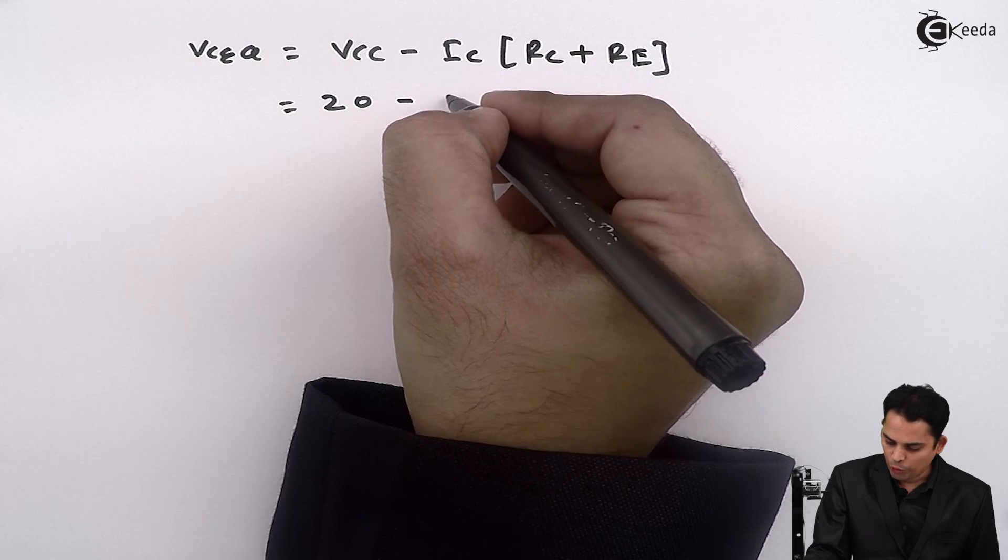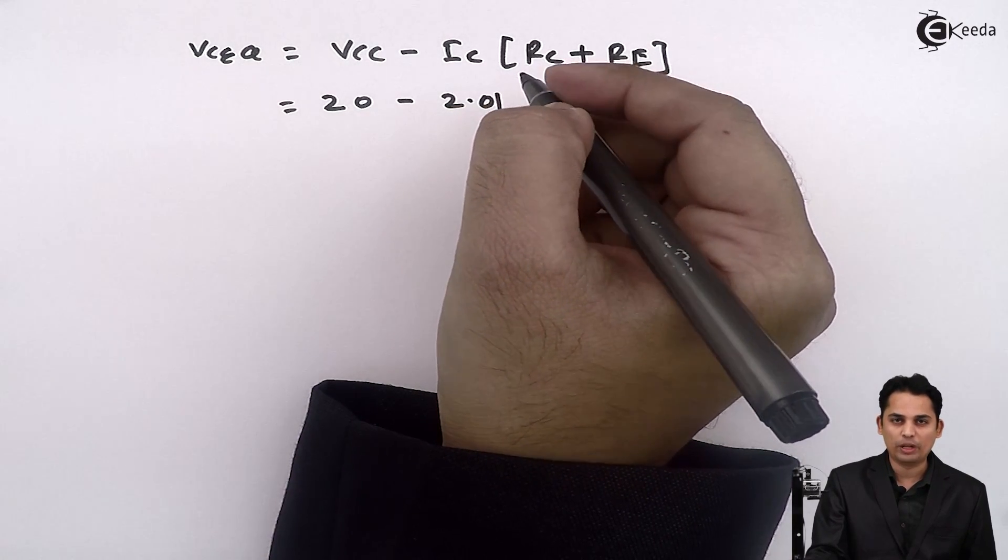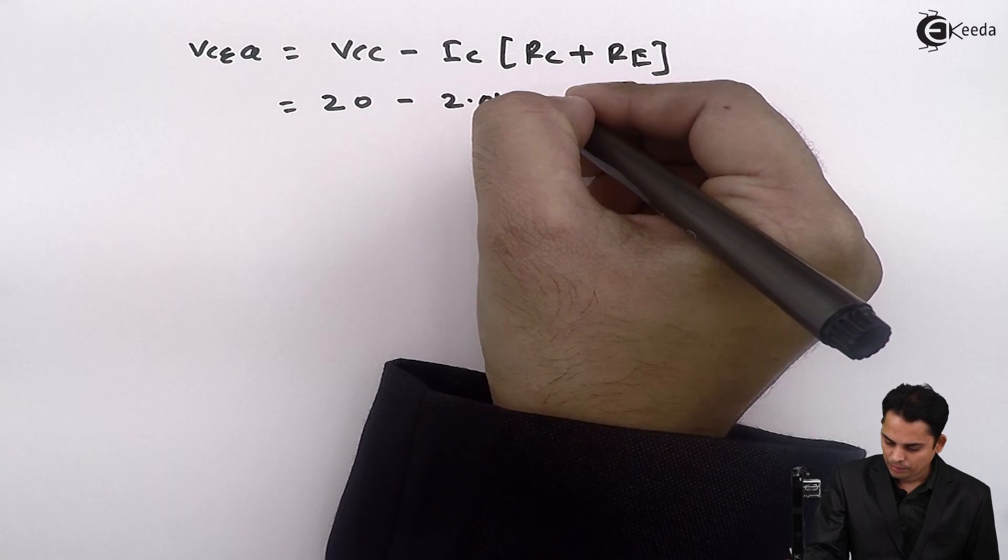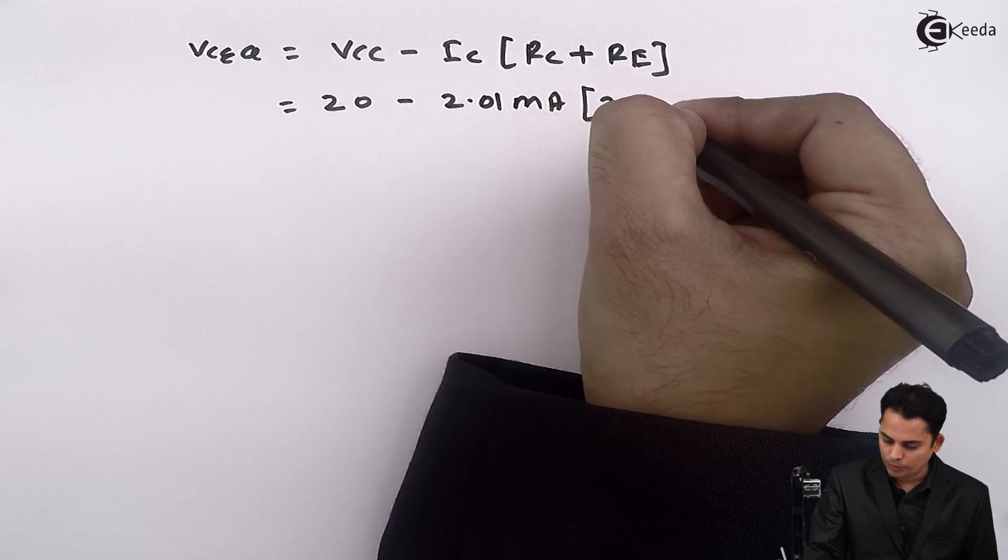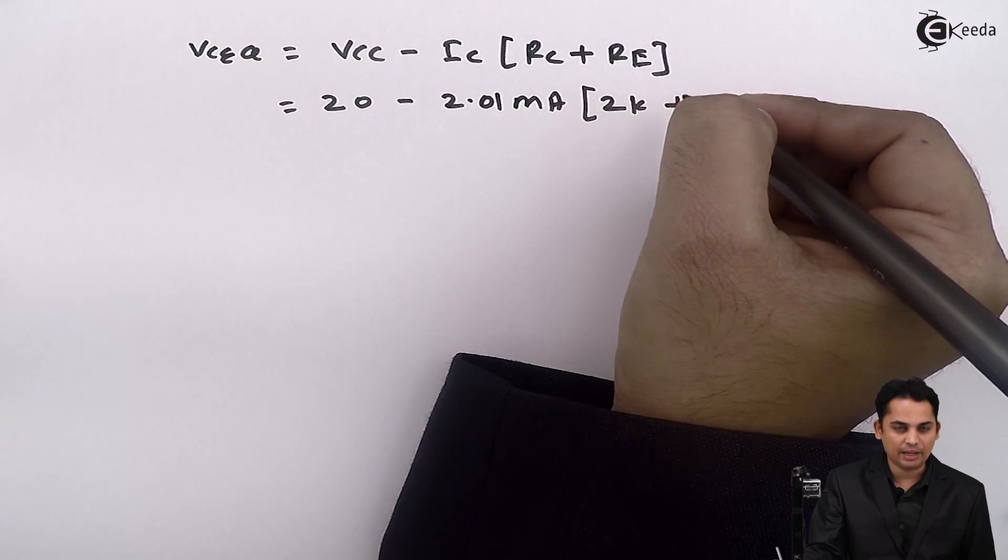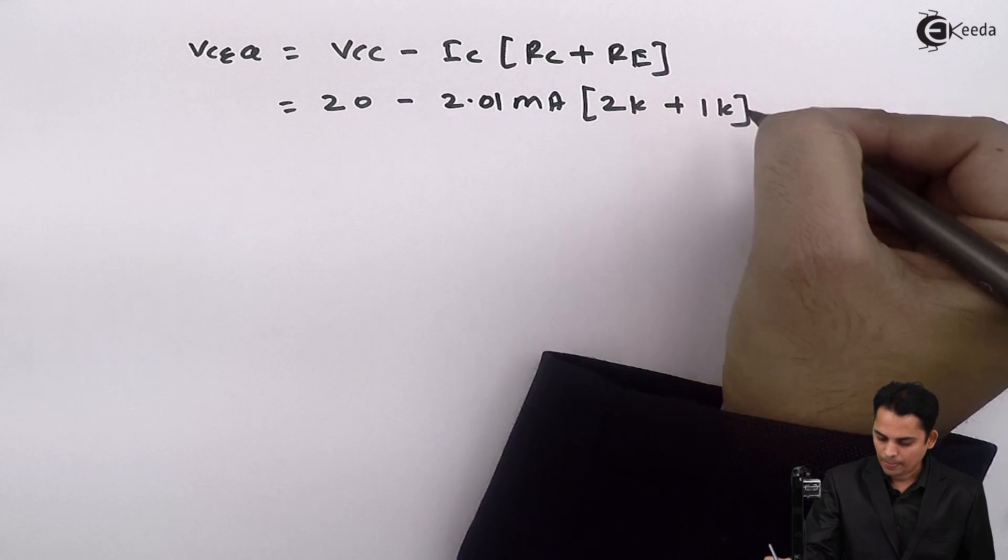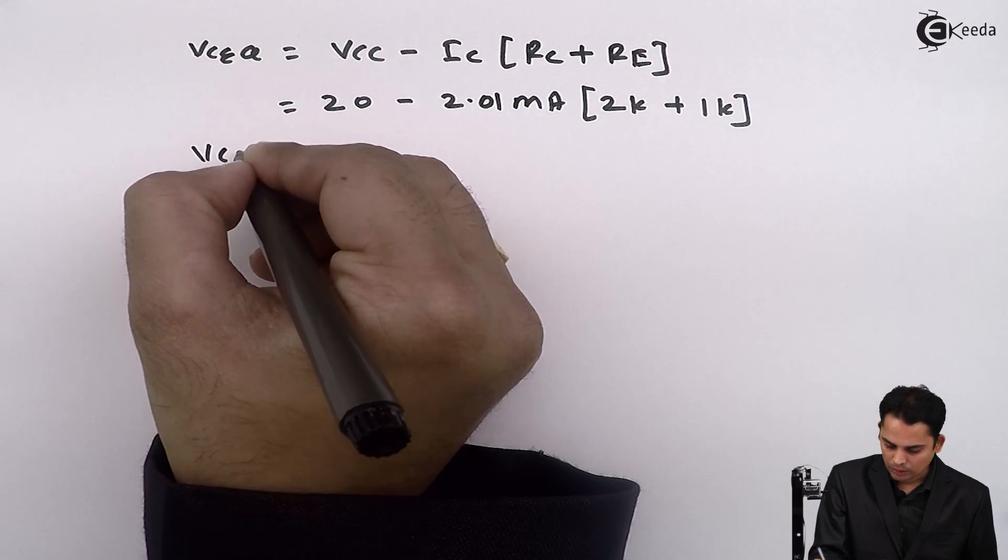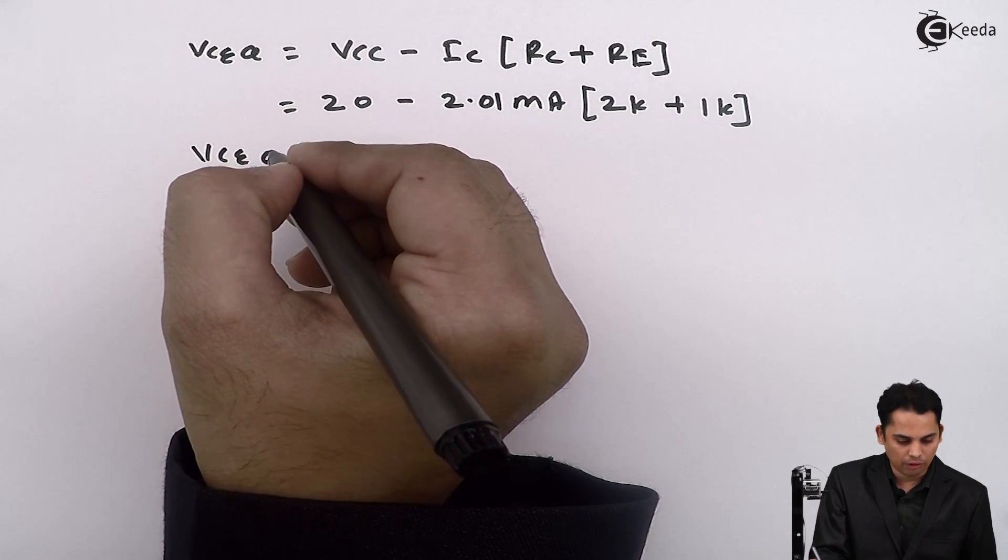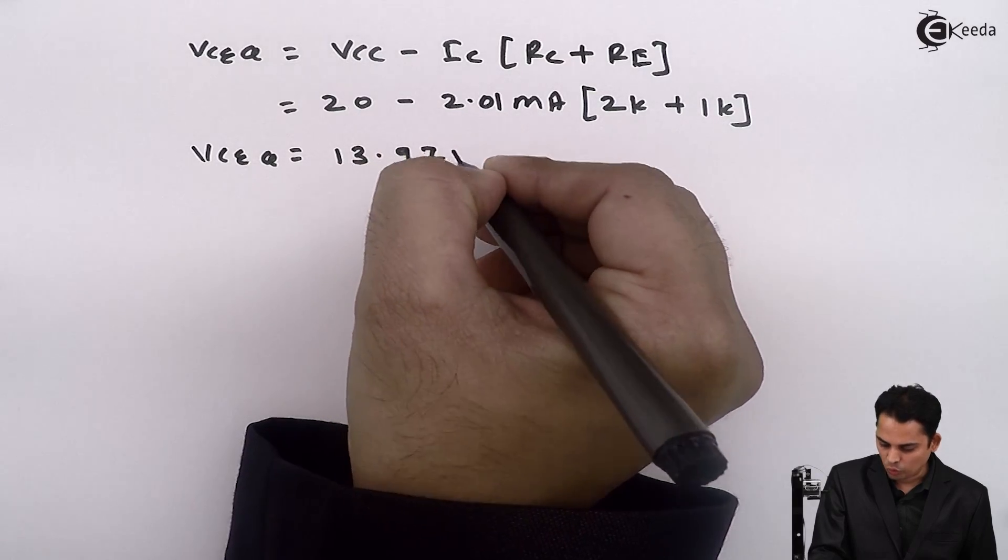IC is 2.01 milli amperes. 2.01 milli amperes multiplied by RC is equal to 2 kilo ohms plus RE is equal to 1 kilo ohms. Hence value of VCEQ is approximately equal to 13.97 volts.